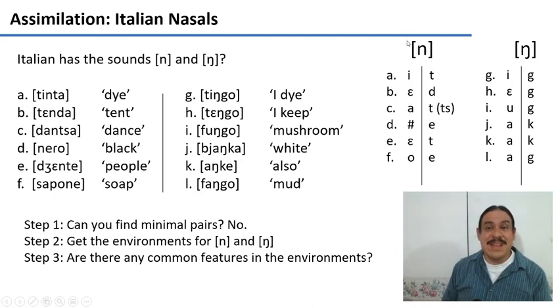So wherever you see the engma, you are never going to see the n. So these two are in complementary distribution.